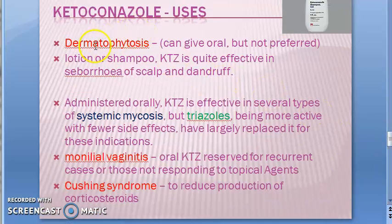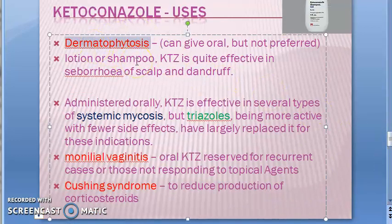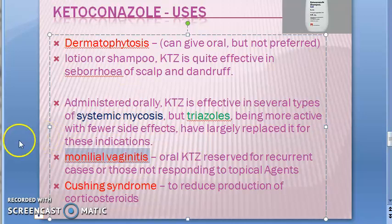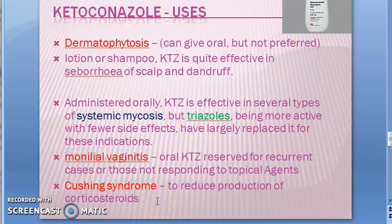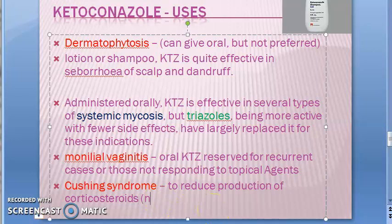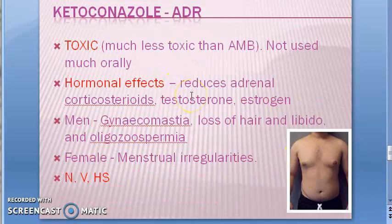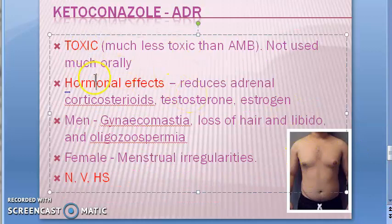KTZ can be used to treat dermatophytosis and systemic mycosis, but triazoles have now become first line and KTZ is only second choice. In recurrent vaginitis or when topical agents are not working, you can give oral KTZ. In Cushing syndrome, it can be used — not as an antifungal, but to reduce the production of corticosteroids.